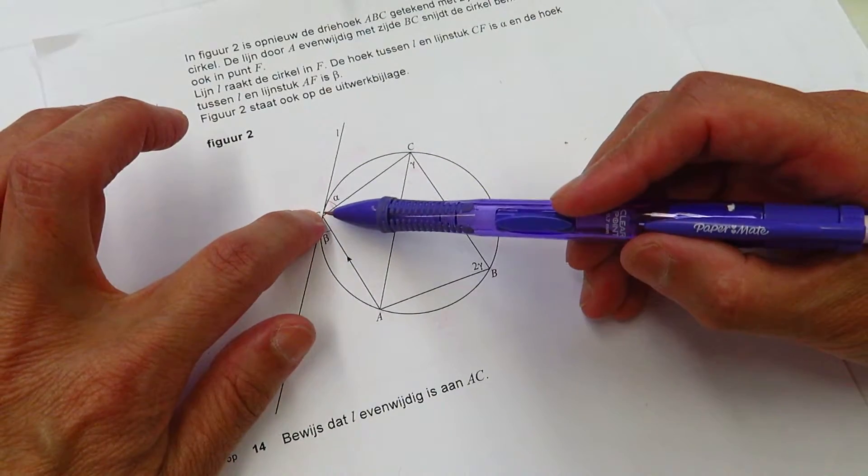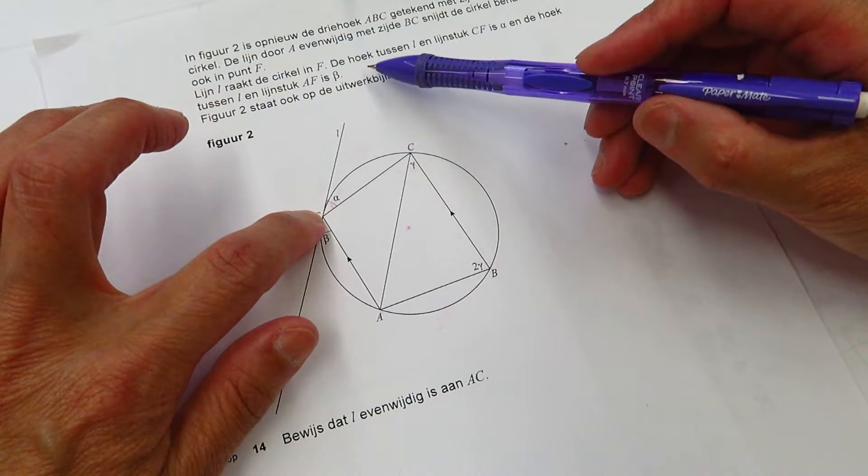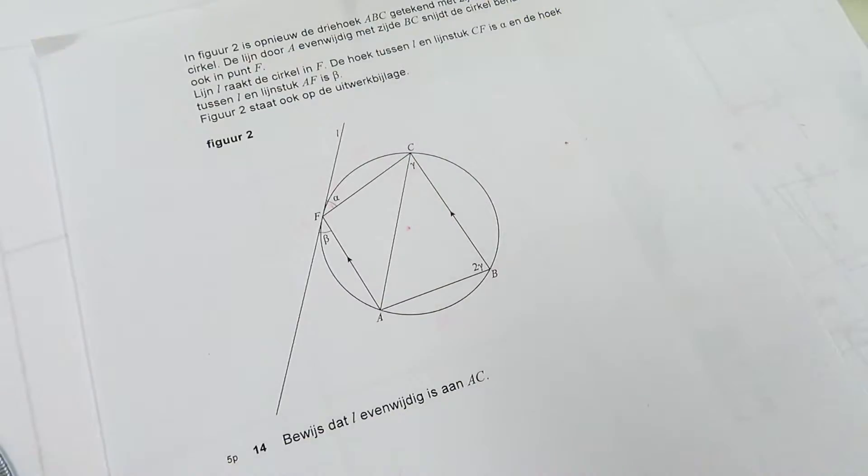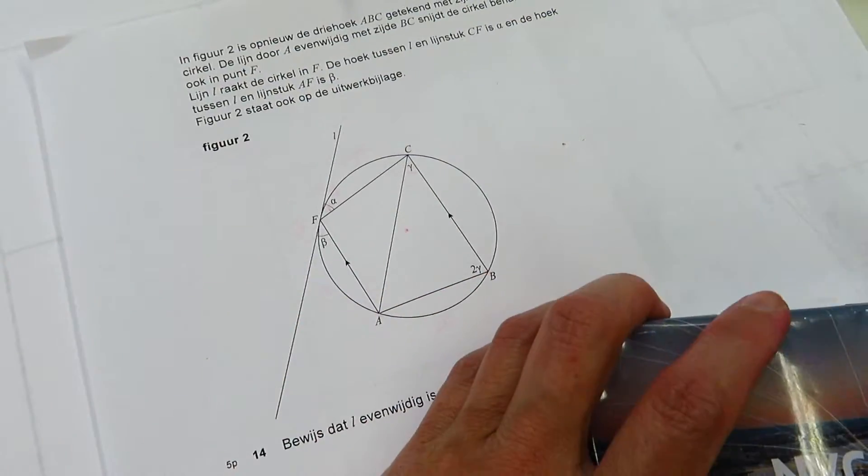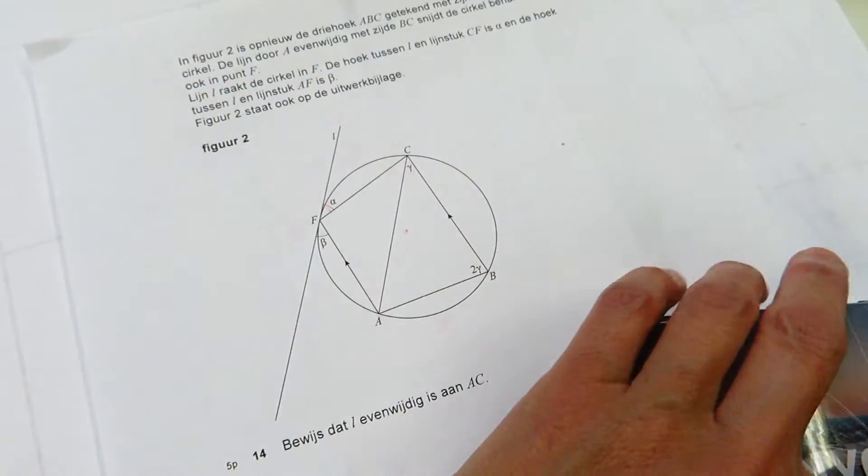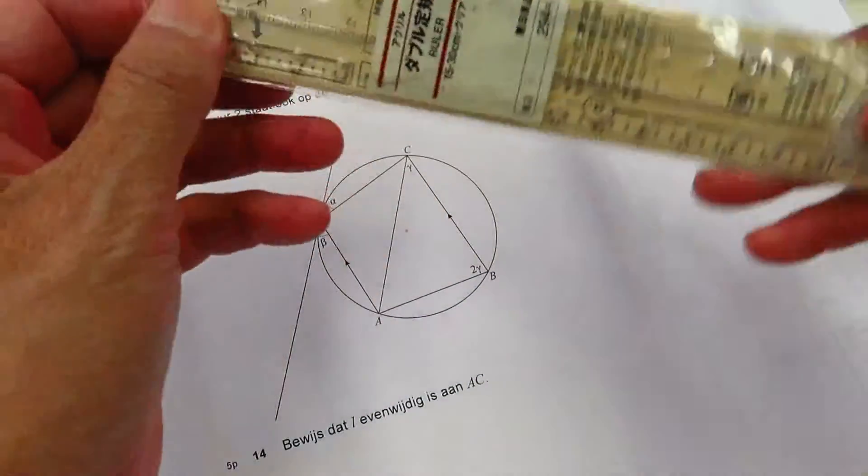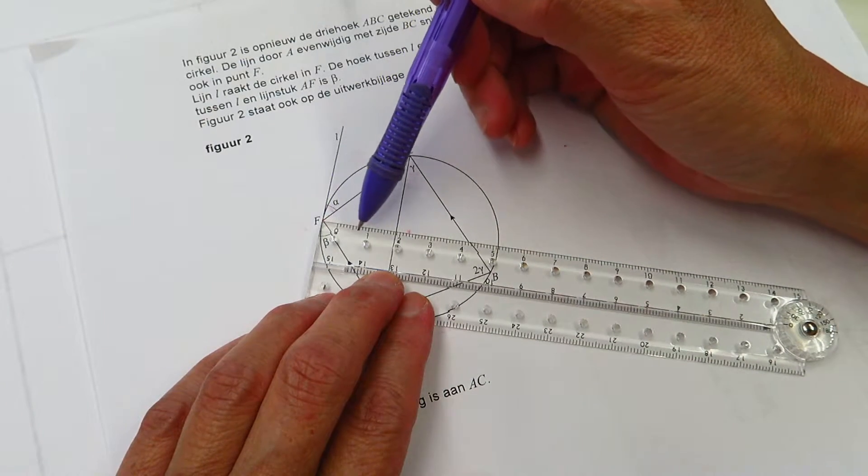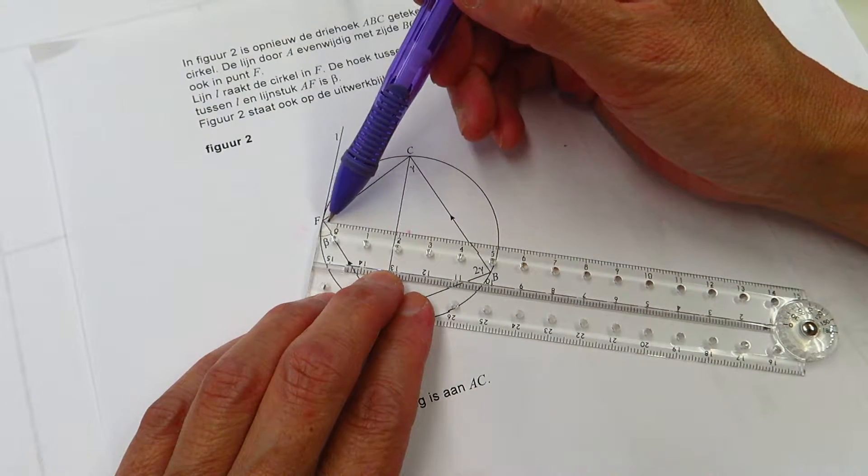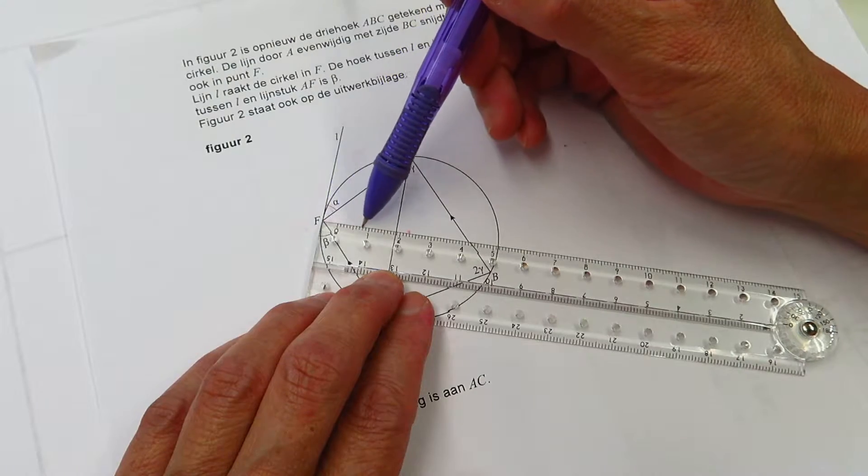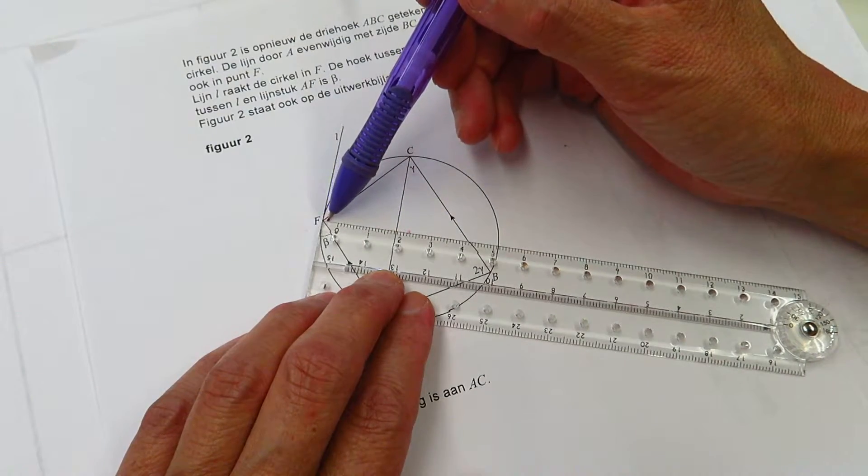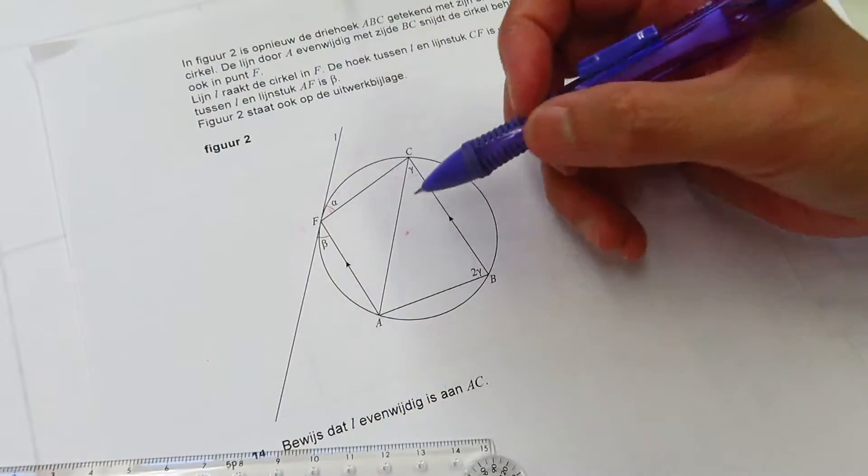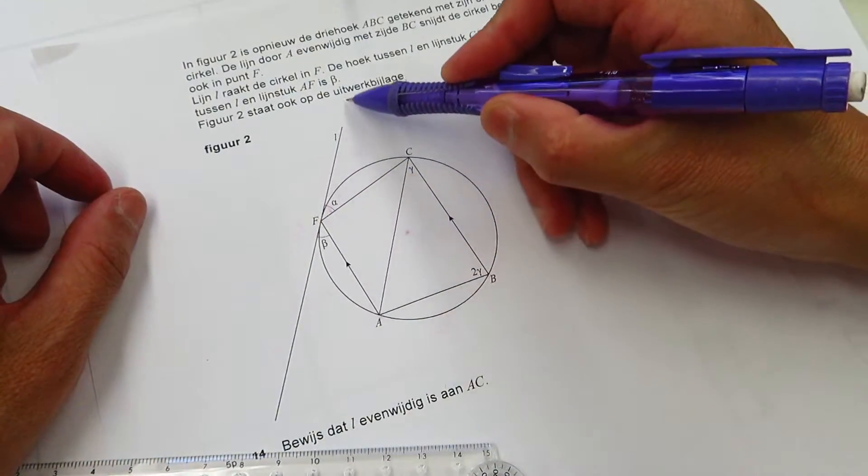From F, we draw a line, a tangent line. We know what is tangent line, right? A tangent line means it is perpendicular to the radius. Yes, we draw a tangent line.